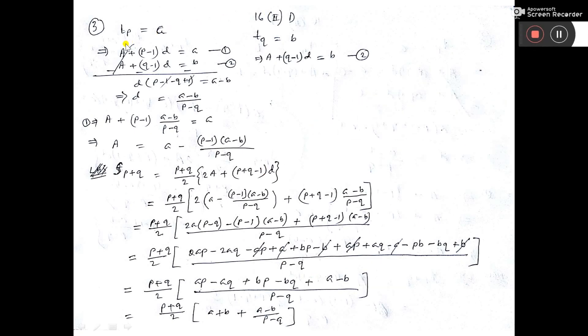If the pth term of an AP is A and qth term is B, that is why here I have written pth term TP is equal to A and qth term TQ is equal to B.